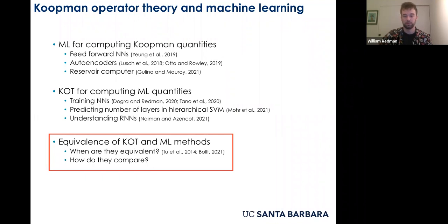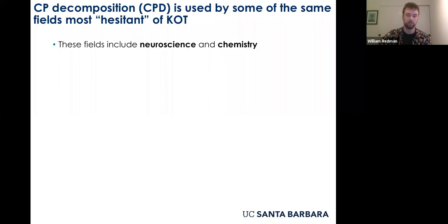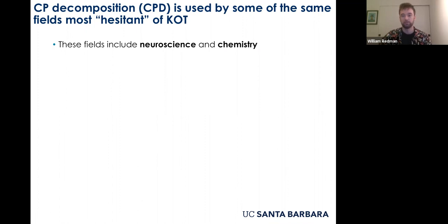This talk focuses on that last intersection — specifically how and when Koopman mode decomposition can be equivalent to CP decomposition, and what that tells us about comparing the two methods. CP decomposition is also becoming especially popular in some of the same fields most hesitant about Koopman — for instance, neuroscience, which is my own background, but also chemistry and to some extent biology.